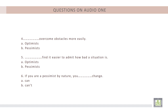Question five: who finds it easier to admit how bad a situation is — optimists or pessimists? The answer is pessimists. Question six: if you are a pessimist by nature, can you change? According to the lecture, while people tend to have one general tendency throughout life, pessimists can work to develop a more positive outlook.